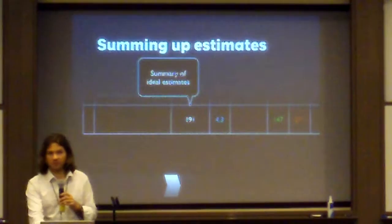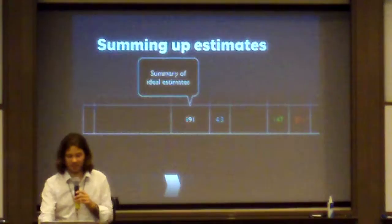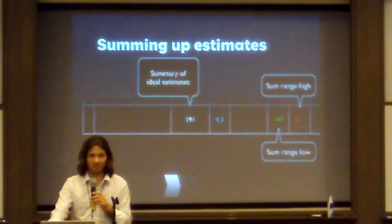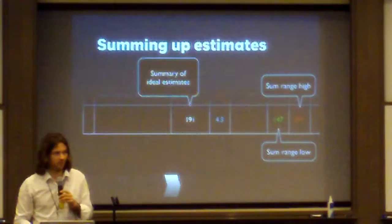And when you're done, first of all, you can sum up your ideal estimate. This is basically what it would probably take in the best possible circumstances. You can sum up the high range, which is basically how long it would take in the worst possible circumstances. The low range, if you're lucky, if all your estimates are always high - but that never happens. I'll tell you that.